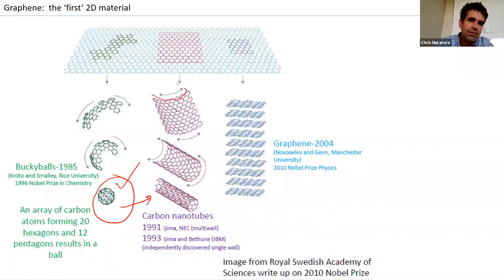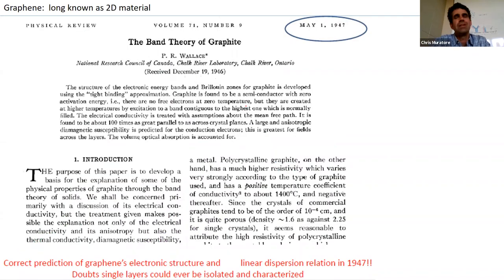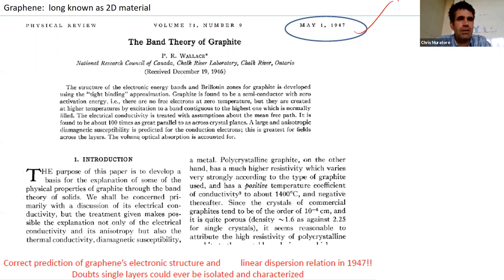About ten years after nanotubes, we started talking about graphene — single atomic layers. It's funny: if you write with a pencil or clean out your grill, you might encounter some of these structures in everyday life. The idea of interesting properties from low-dimensional forms of carbon is not new. A famous 1947 paper predicts the electronic structure and properties of graphene that give it really interesting transport properties — both charge and thermal — as well as mechanical properties.